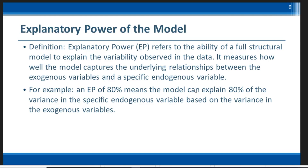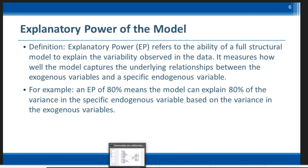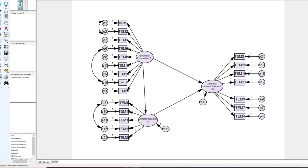For example, an EP of 80 percent means the model can explain 80 percent of the variance in the specific endogenous variable based on the variance in the exogenous variables. Now let's look at the example model we have.